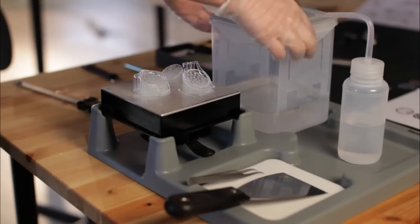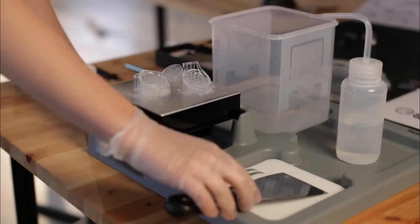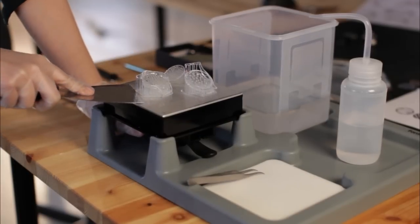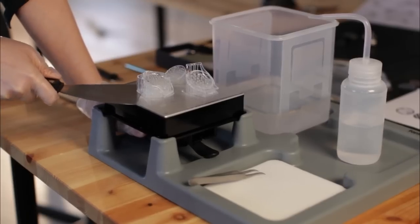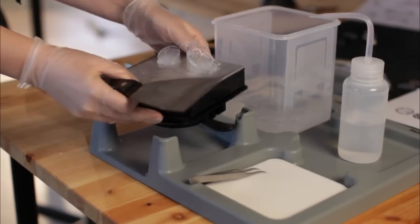Your parts will be attached to the build platform. Take the scraper and try to get underneath the base of the part. Hold the build platform and tray by placing your other hand below the build platform. Always scrape away from yourself. The scraper is a sharp tool and should be used with care.